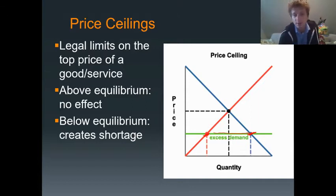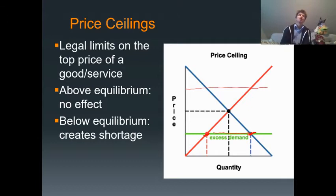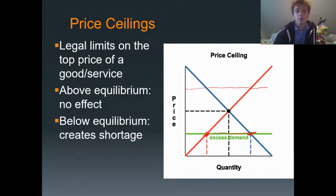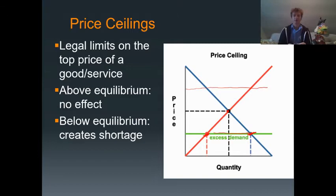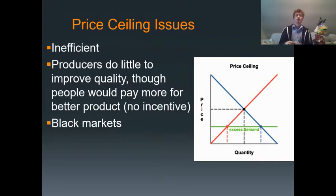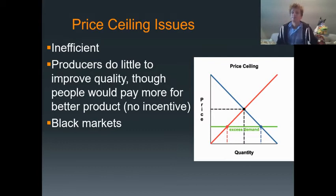Now if a price ceiling is put above equilibrium, it's just not effective. It's saying the price can't go above whatever the ceiling is, but the market doesn't want to be above that price — it wants to be at equilibrium. So if a price ceiling is put above equilibrium, it will have no effect and the price will remain at the equilibrium price.